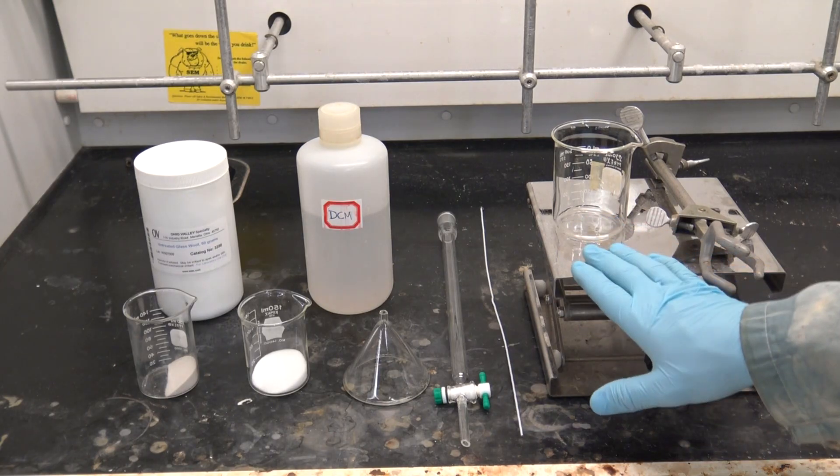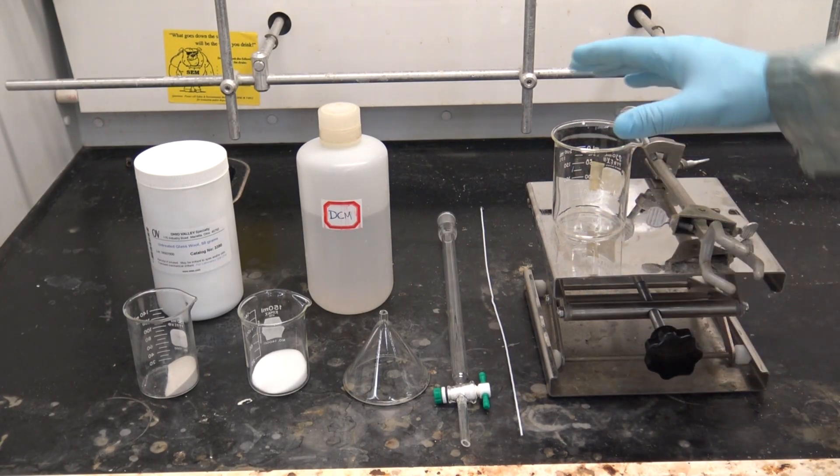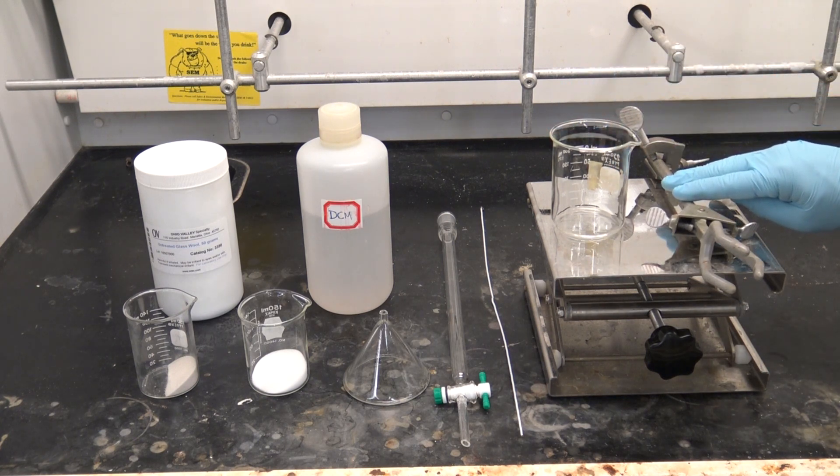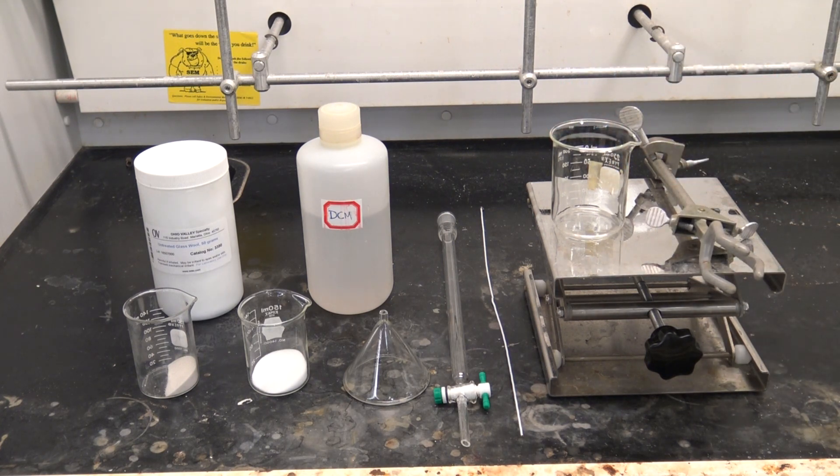I'm also going to need my lab jack, a beaker for receiving the solvent as it flows through the column, and some means of immobilizing my column. I'm going to use a three-fingered clamp for that.